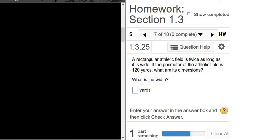A rectangular athletic field is twice as long as it is wide. If the perimeter of the athletic field is 120 yards, what are its dimensions?